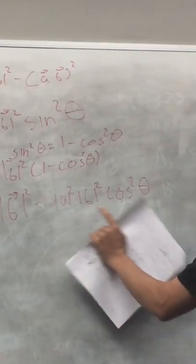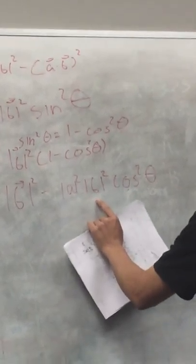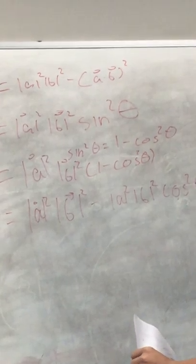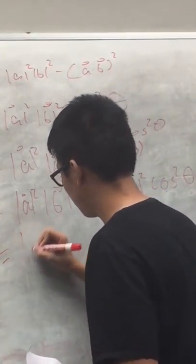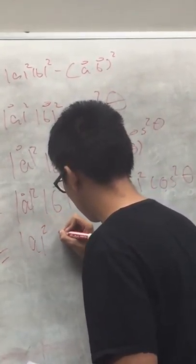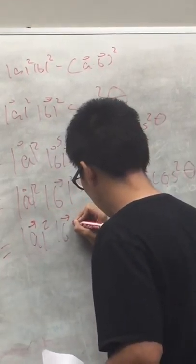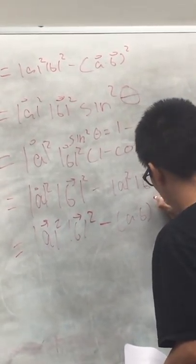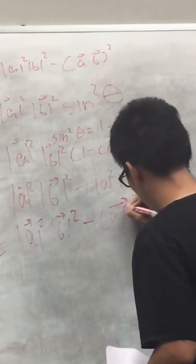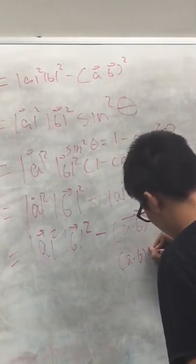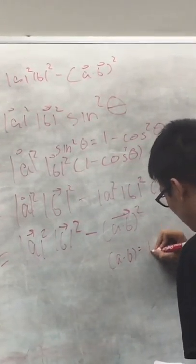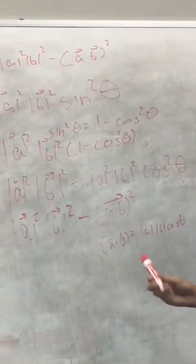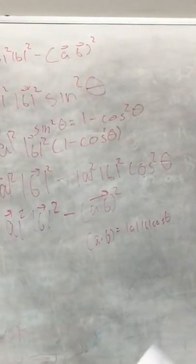This right here, the magnitude of a times magnitude of b times cosine theta, is essentially the dot product right here. So you can convert this to the dot product squared, hence this will end up being minus a dot b squared, because a dot b equals magnitude of a times magnitude of b times cosine theta. So with the squared, you're basically squaring everything, so it's not that bad.